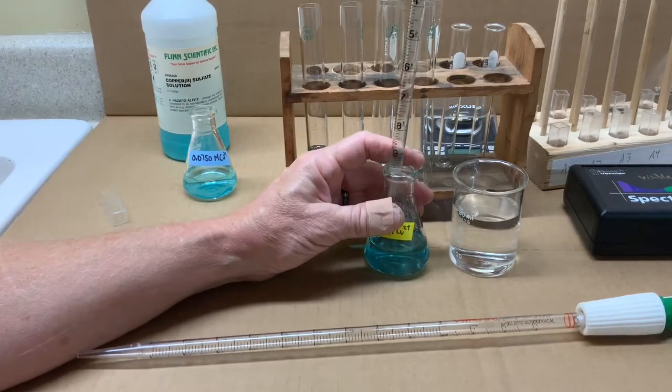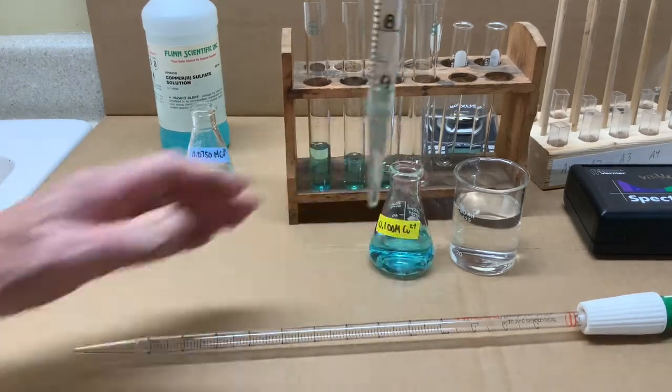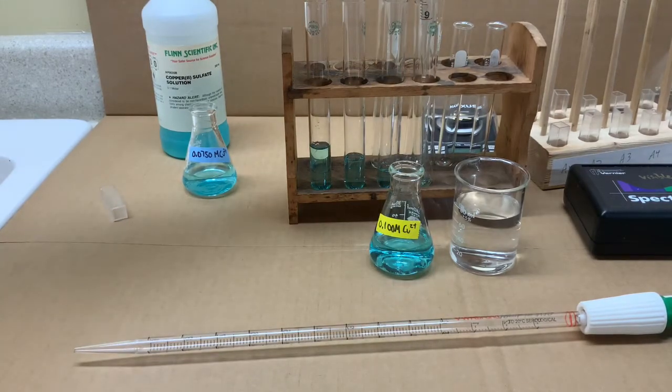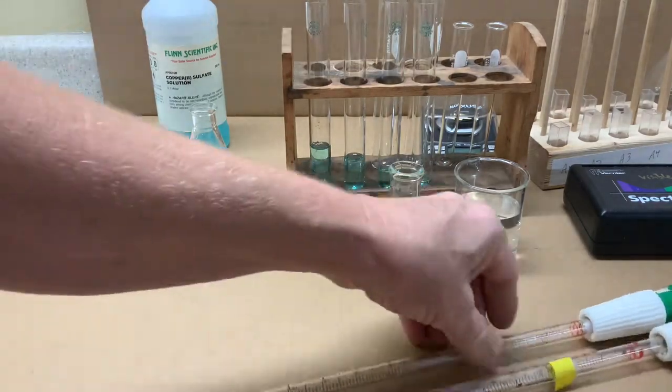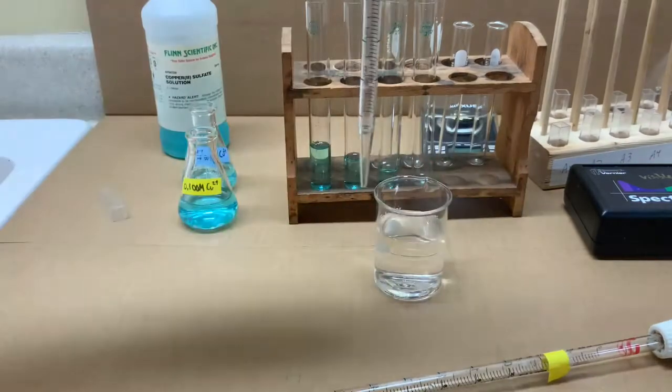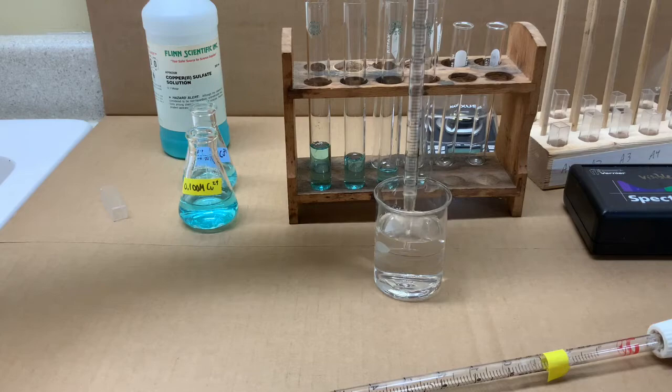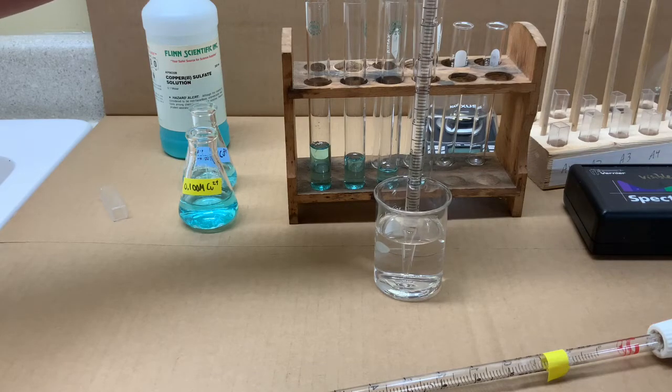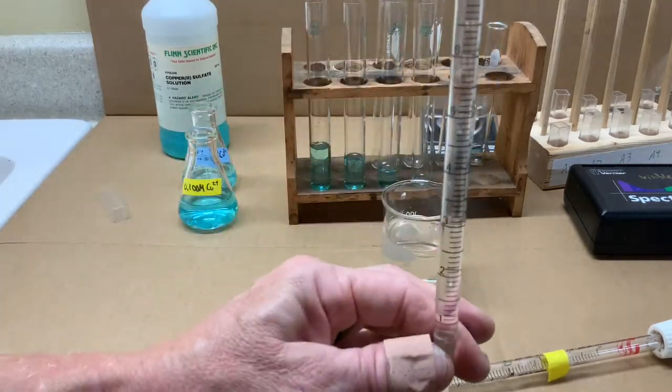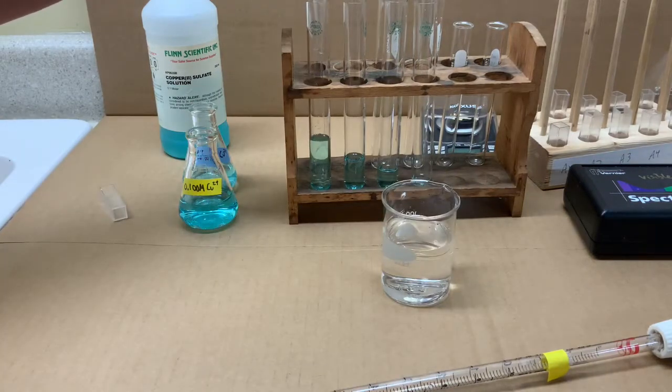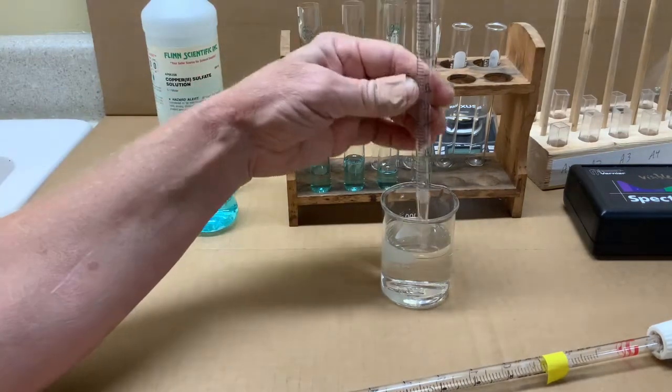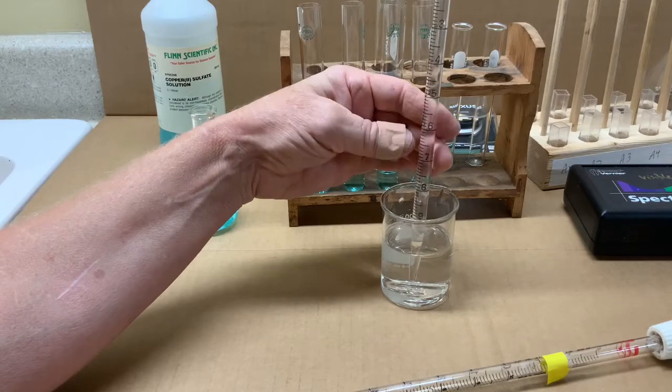And the fifth solution will be 1 milliliter of stock and poured in. Then changing pipettes and water will be drawn. So in solution 2, we'll draw up 3 milliliters of water to add to the 7 milliliters of stock solution.